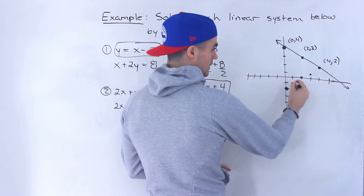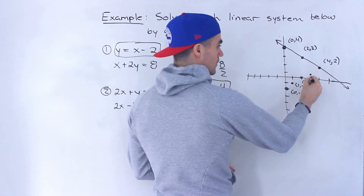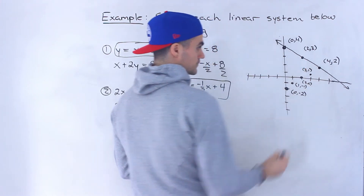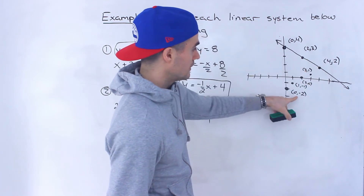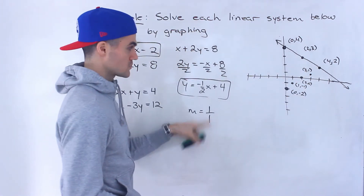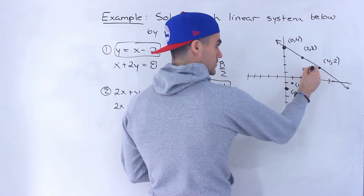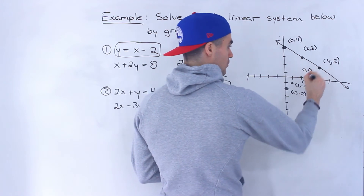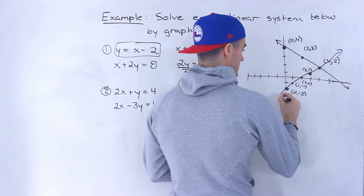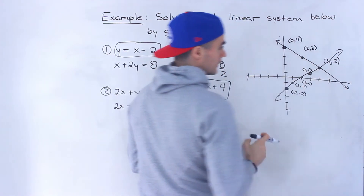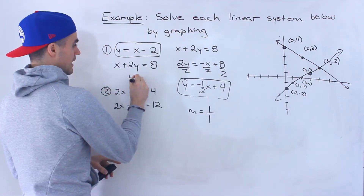We start at zero and negative two, then one and negative one, two and zero, three and one. Notice all the x values are increasing by one and all the y values are increasing by one — because it's one over one. Then from three and one, the x value goes to four and the y value goes to two. This graph isn't to scale, but it should be a straight line on graph paper. So four and two is the answer.